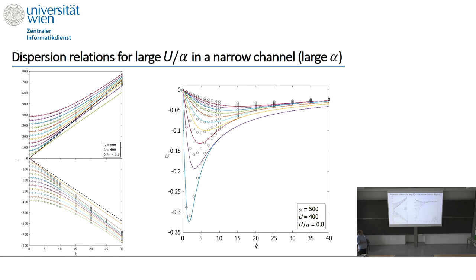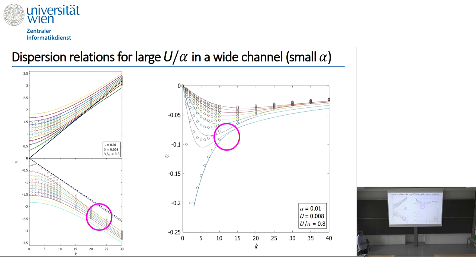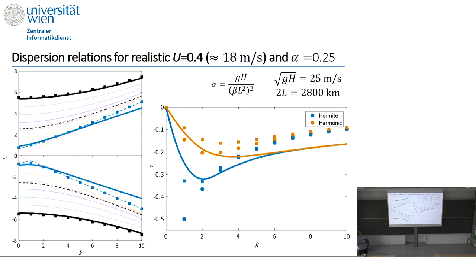For realistic parameter values — mean flow about 18 m/s, alpha about 1/4, typical phase speed 24–25 m/s, and a channel of about 3000 km — the results look like the large U/alpha case. Comparing numerical solutions for the full system with the approximation, there is no good agreement for the n=0 and n=1 modes.